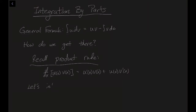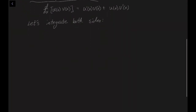Now let's integrate both sides. If we integrate both sides, we get that the left-hand side is U of X times V of X. And on the right-hand side, we get the integral of U prime of X times V of X dx plus the integral of U of X times V prime of X dx.